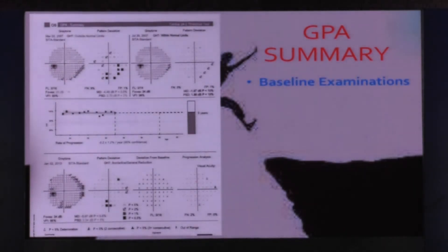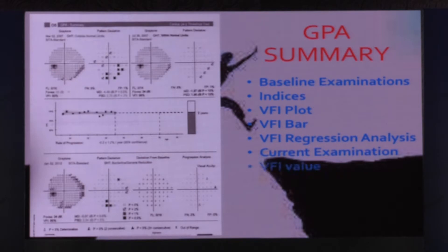And this is the GPS summary, which looks into the baseline examinations, looks into all the indices of the Humphrey that you have. I'm not going into that because I'm sure you all are familiar with the indices. The VFI plot actually gives you the amount of vision which is left that the patient has. It considers the VFI bar that you see out there, the second bar. And then you have the VFI regression analysis, the current examination, and the VFI value, progression analysis symbols which I just told you about, and the GPA alert. These are all the things that the Humphrey GPA summary would give you when you're seeing progression on the Humphrey.